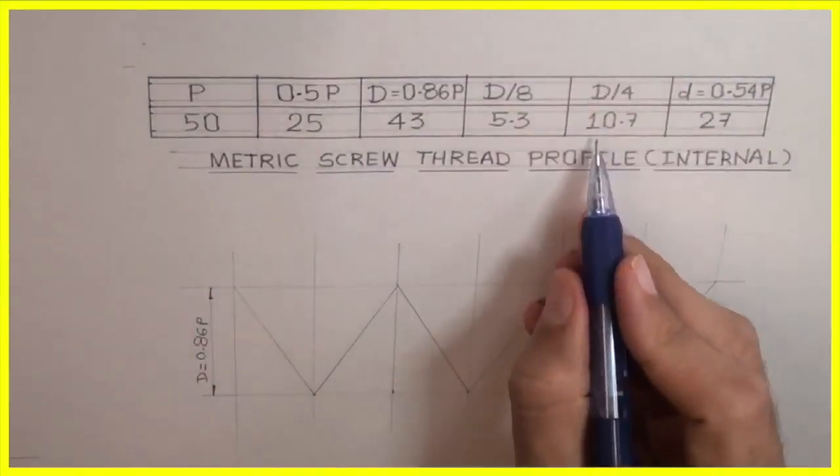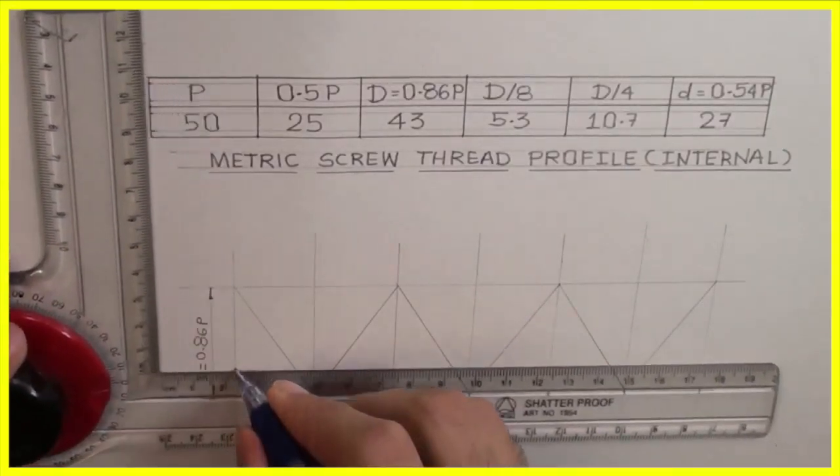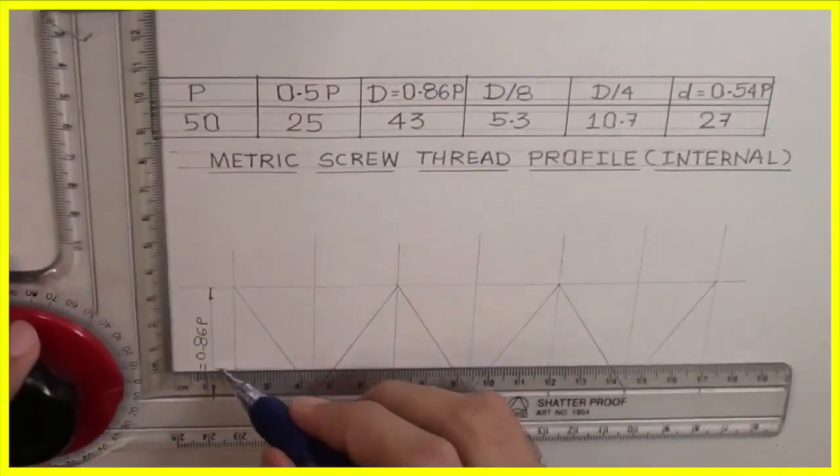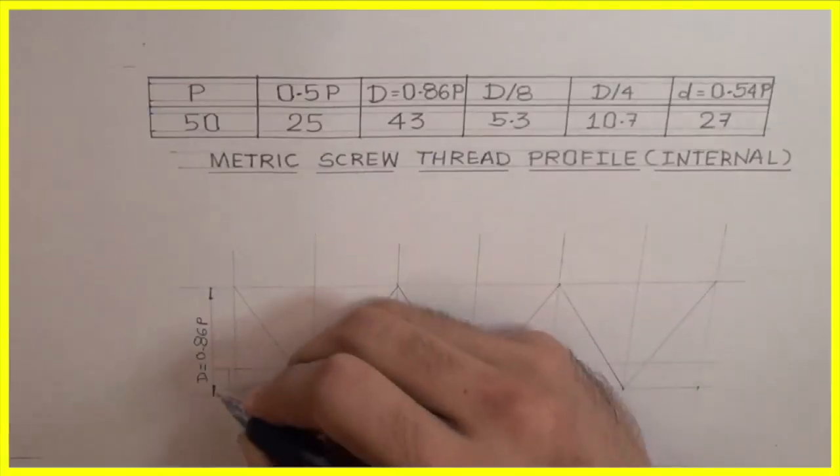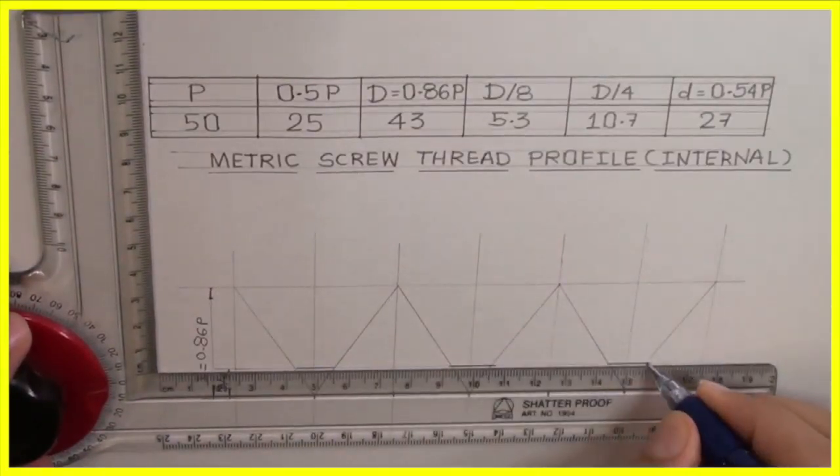After drawing this, we will take d by 4, that is 10.7. From bottom, we will take d by 4 and we will draw a line. See, this will be straight. So we will draw that.